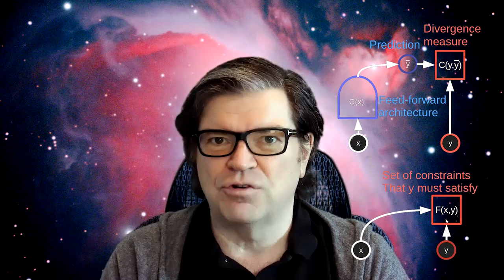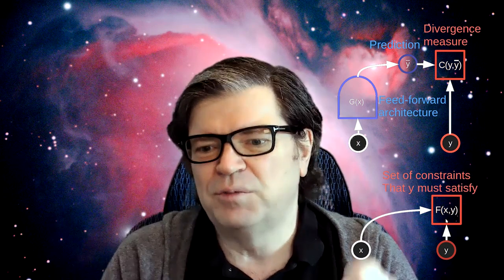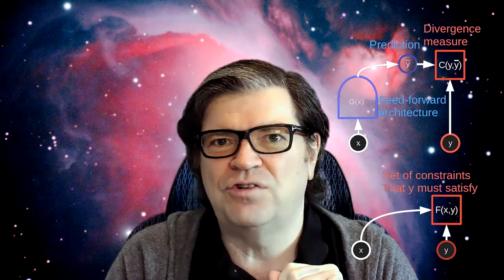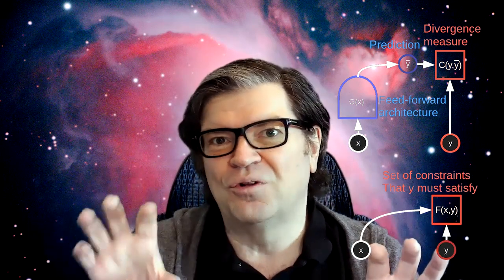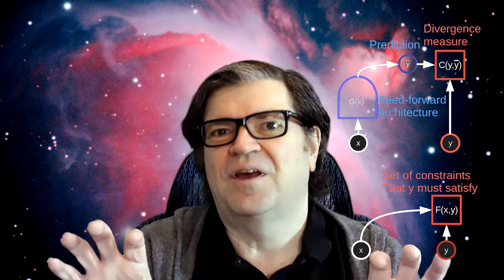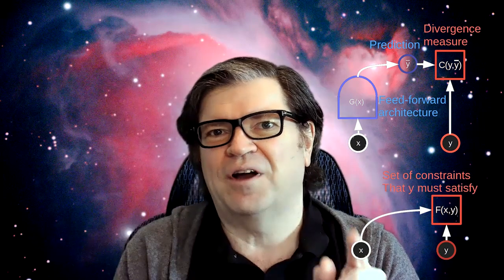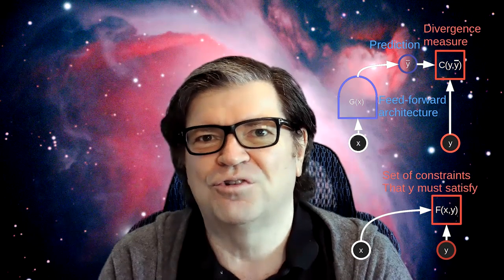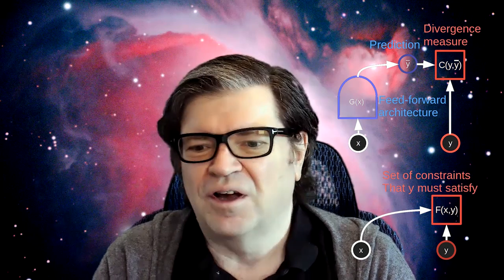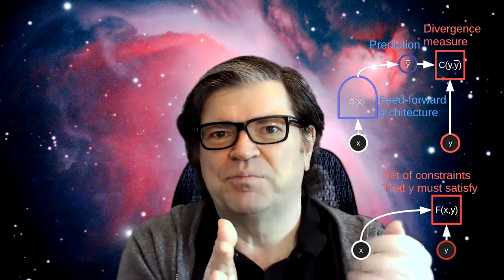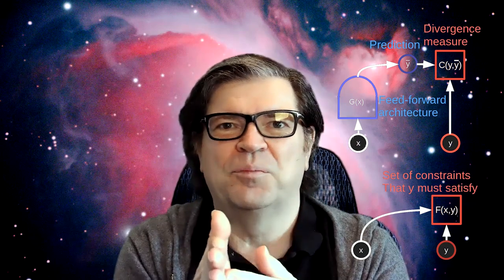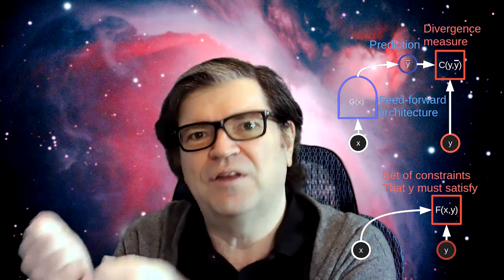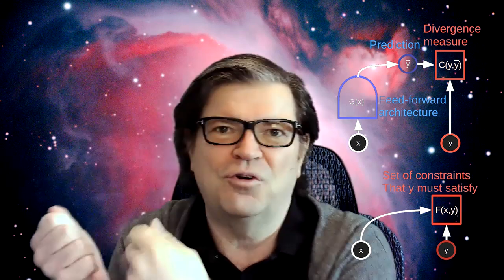That scalar measures the incompatibility between x and y. So you give it an x, say a low-resolution image, and then you give it a proposal for y, and what the machine tells you is whether this y is a good match for x — whether it's a good high-resolution version of x. Or x could be a video clip and you ask the system if y is a good continuation, and the system tells you if that's a good continuation or bad.